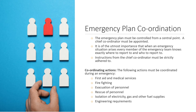Multiple persons as well as situations need to be managed during an emergency, which calls for effective emergency plan coordination. The emergency plan must be controlled from a central point. A chief coordinator should be appointed. It is of utmost importance that when an emergency situation arises, every member of the emergency team knows exactly where to report to and who to report to. Instructions from the chief coordinator must be strictly adhered to. Things that need to be managed include: first aid and medical services, firefighting, evacuation of personnel, rescue of personnel, the isolation of services such as electricity, gas or other fuel supplies, as well as different engineering requirements.